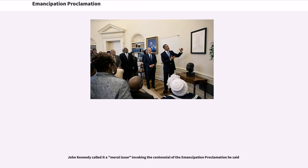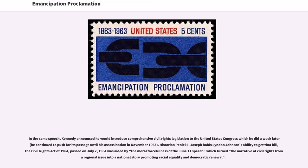John Kennedy called it a moral issue, invoking the centennial of the Emancipation Proclamation. In the same speech, Kennedy announced he would introduce comprehensive civil rights legislation to the United States Congress, which he did a week later, and he continued to push for its passage until his assassination in November 1963. Historian Penny Ali Joseph notes Lyndon Johnson's ability to get that bill — the Civil Rights Act of 1964 — passed on July 2, 1964, was aided by the moral forcefulness of the June 11 speech, which turned the narrative of civil rights from a regional issue into a national story promoting racial equality and democratic renewal.